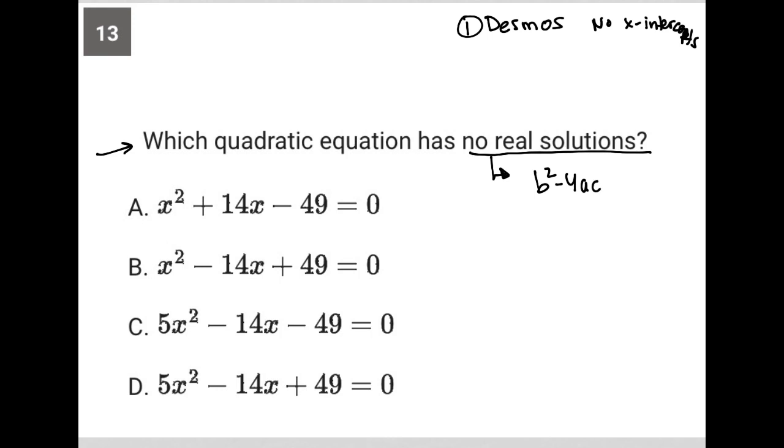If b squared minus 4ac is greater than zero, that means we have two real solutions. If it is equal to zero, we have one real solution. And if it's less than zero, we have no real solution, so just imaginary solution. So this is a situation where there's no real when b squared minus 4ac is less than zero.